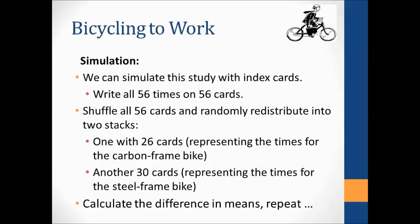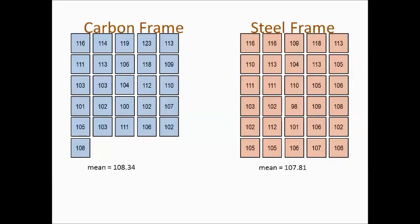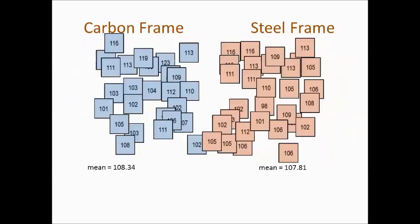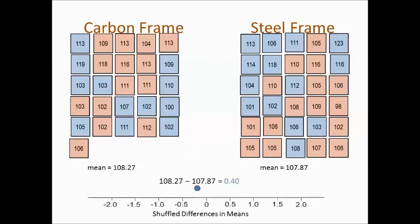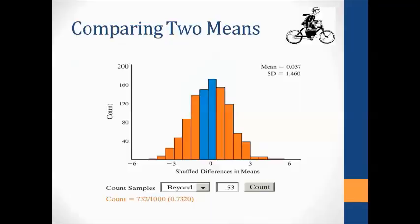Since there were 56 observations, we need 56 cards. We write the times on all 56 cards, shuffle them, put 26 cards in one pile and 30 in the other — because those were the two sample sizes. Then we calculate the difference in means and repeat that many times to develop a null distribution. Here's a null distribution with around a thousand shuffles. You can see our difference in means of 0.53 is not very significant — it's fairly close to the middle — giving a huge p-value. So there's no significant difference in long-run mean commute times between those two bikes.